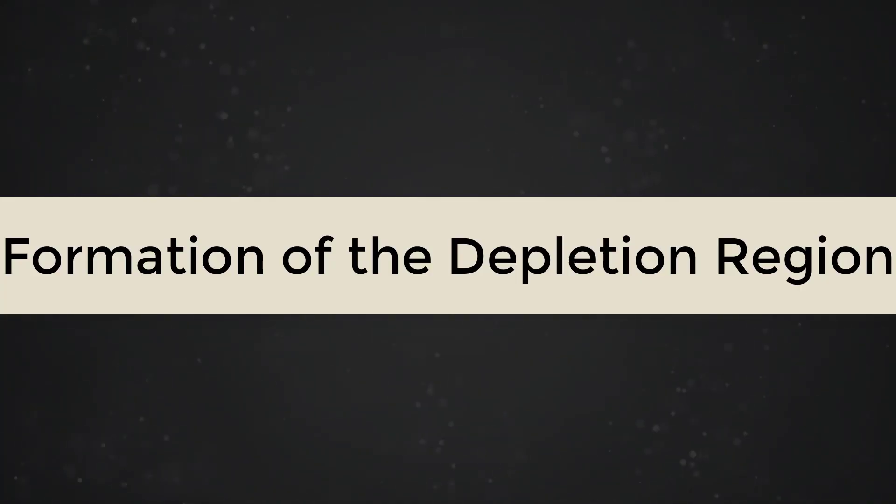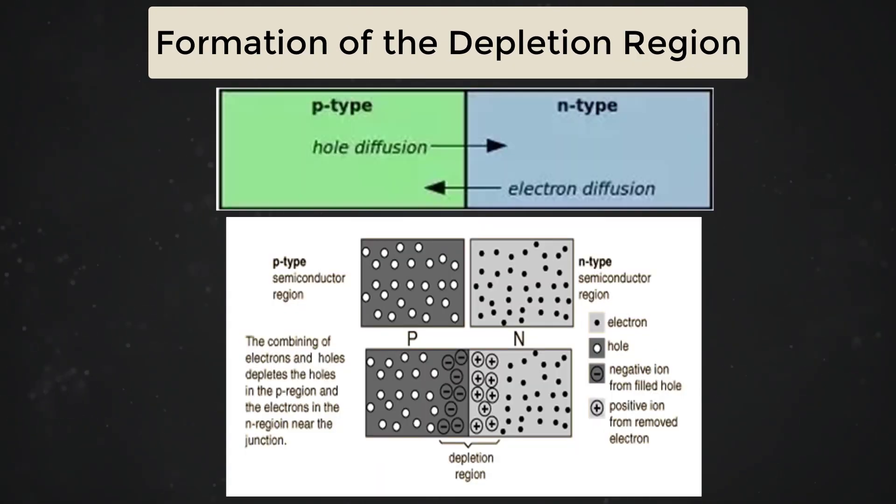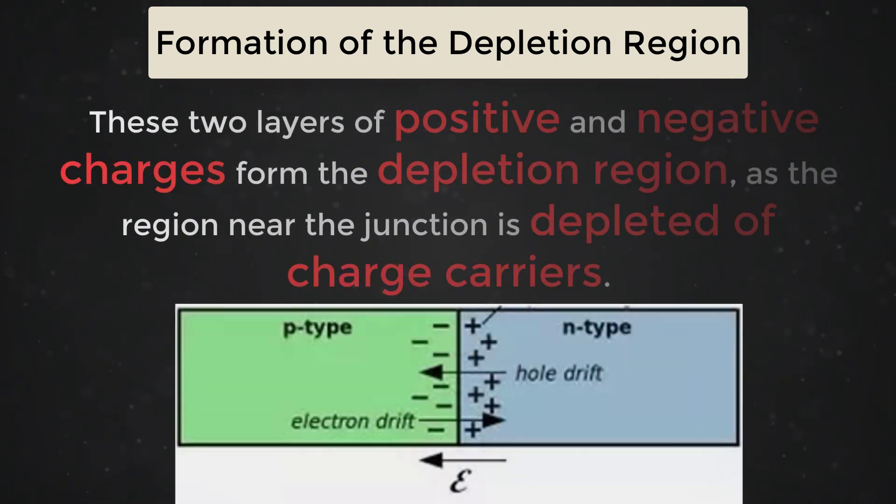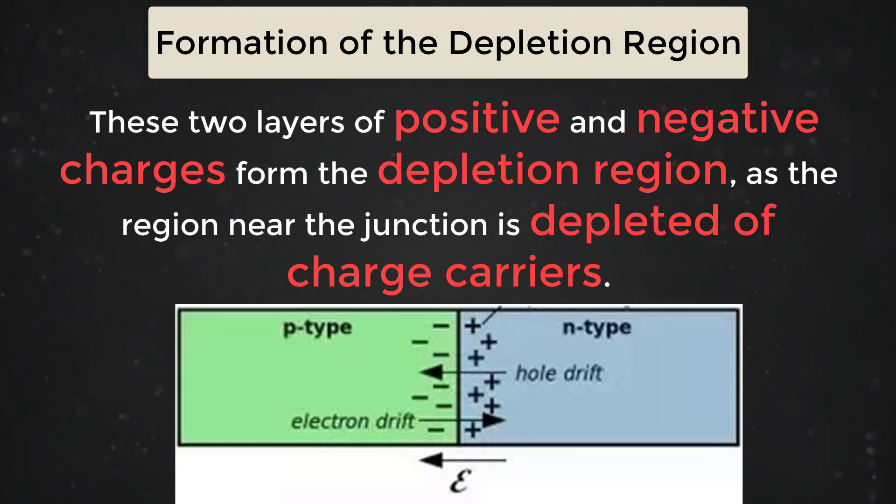Formation of Depletion Region. At the instant of the PN junction formation, free electrons near the junction diffuse across the junction into the P region and combine with holes. Filling a hole makes a negative ion and leaves behind a positive ion on the N side. These two layers of positive and negative charges form the depletion region, as the region near the junction is depleted of charge carriers.